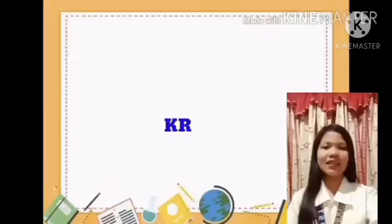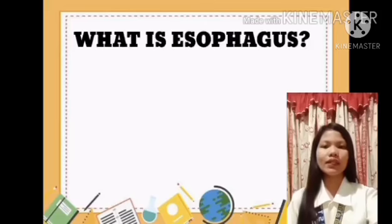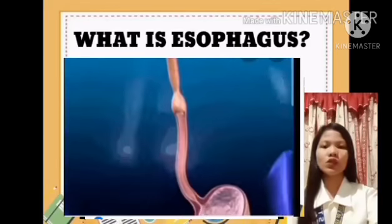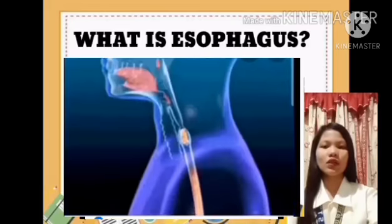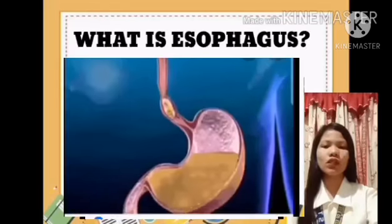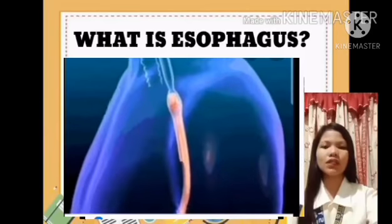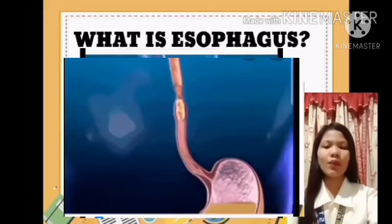Hello everyone! I am Christine E. Cordero and I will discuss the esophagus. What is the esophagus? It is an organ in the digestive system. It is part of the gastrointestinal tract, which is the tube that goes from the mouth to the anus. The GI tract includes the esophagus, stomach, and small intestine. Other organs of the digestive system include the liver, gallbladder, and pancreas.